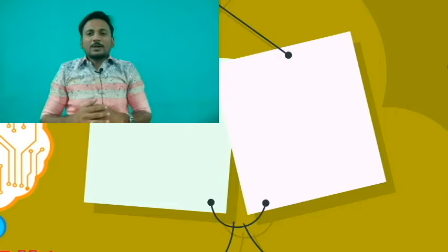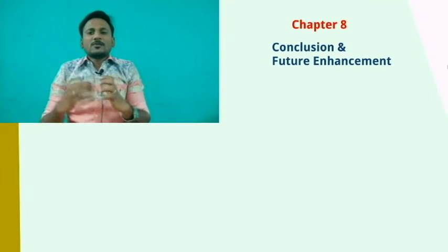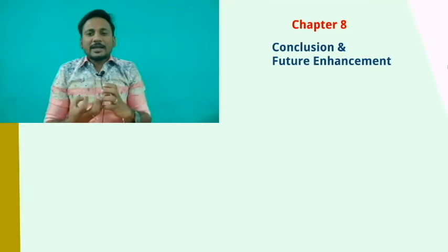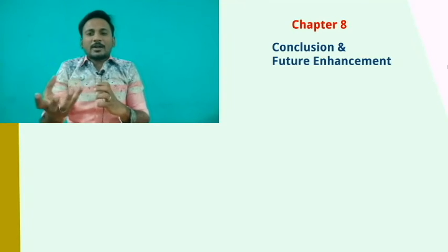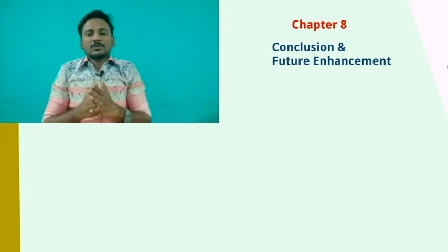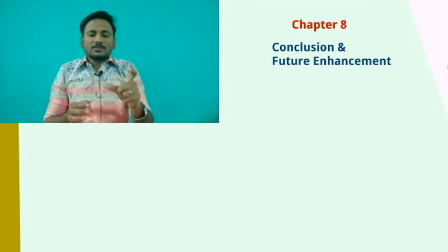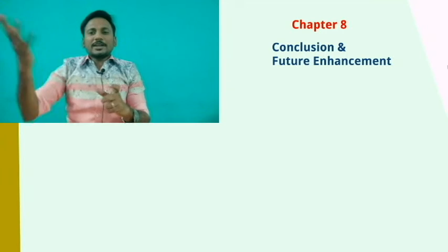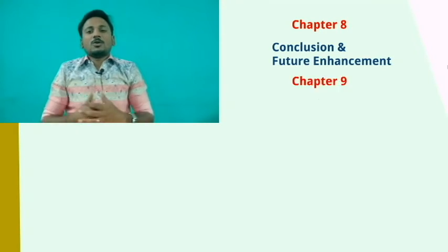Your eighth chapter is Conclusion and Future Enhancement. Once your project is developed and executed, you write your conclusion — what was your motivation, what you executed, and what results were achieved. For example, if you have a data mining project, you represent the accuracy result and what the application does. For Future Enhancement, you describe ideas that could not be implemented within the project duration — what else could be added or improved in future.